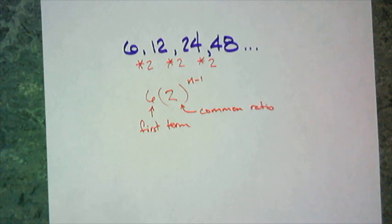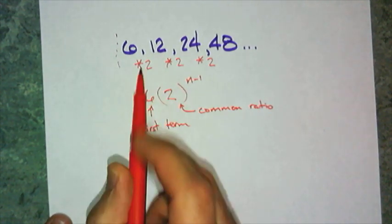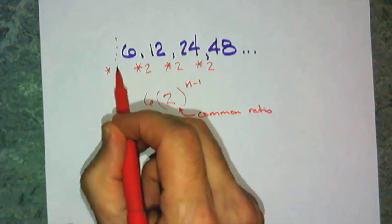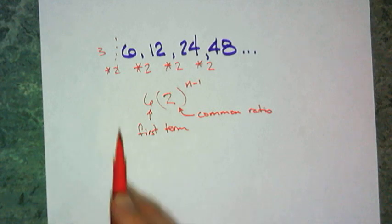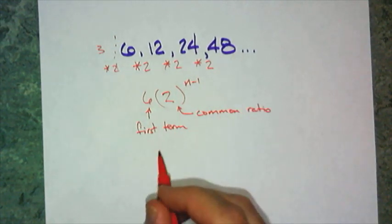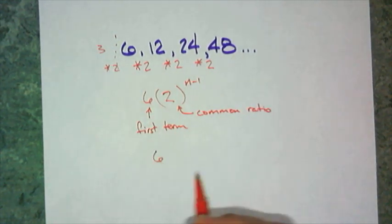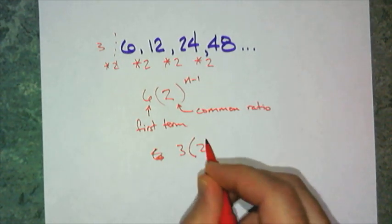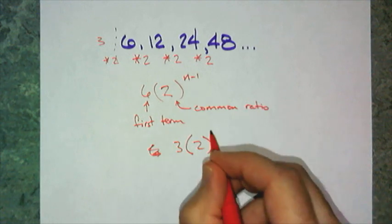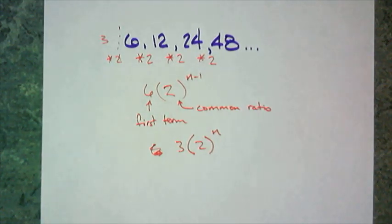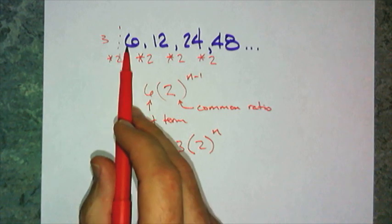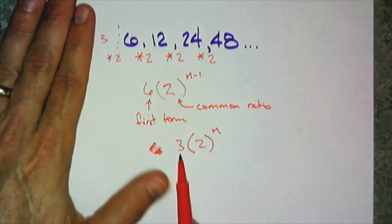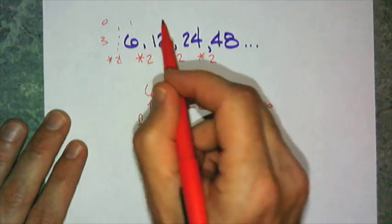I could also write this, because if I do the same thing and went backwards 1, what do I multiply by 2 to get 6, and that would be a 3. And that changes this just a little bit, because it would be 3 times the common ratio raised to the n power. It's just shifting the pattern back a little bit. Instead of starting, this one starts off with the first term, this one would start off with the first term, but I'm using the 0 term to help me write it.